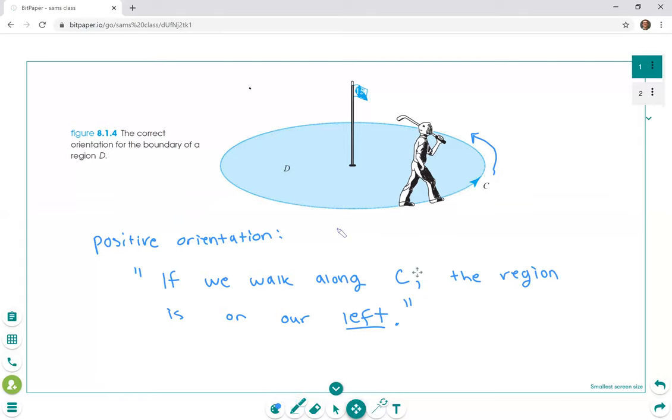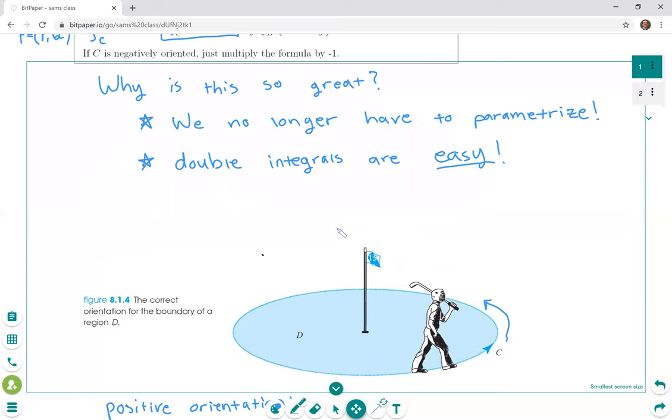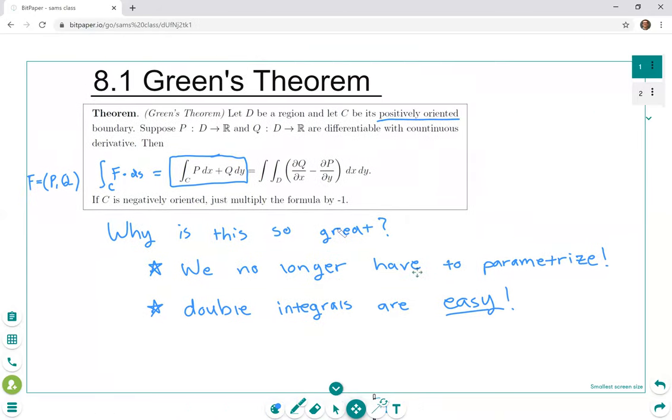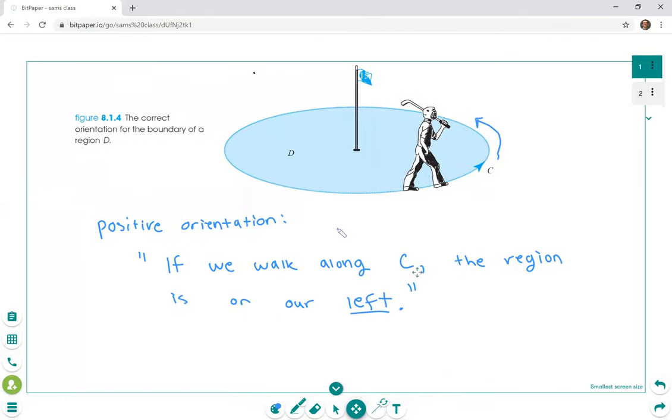So right, of course if you walk along the curve and it's on your right, that's what we call the negative orientation. And how we deal with that is, well if C is negatively oriented, we just multiply by a negative one. So maybe you could take this as ∂P/∂y minus ∂Q/∂x instead of ∂Q/∂x minus ∂P/∂y.